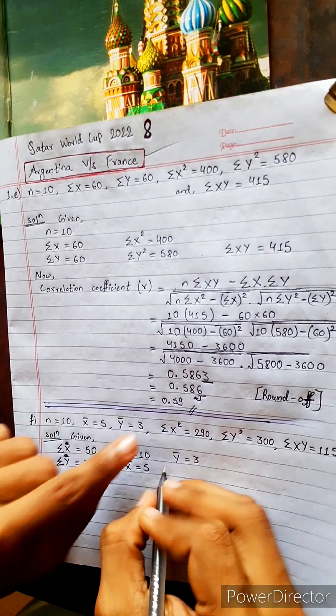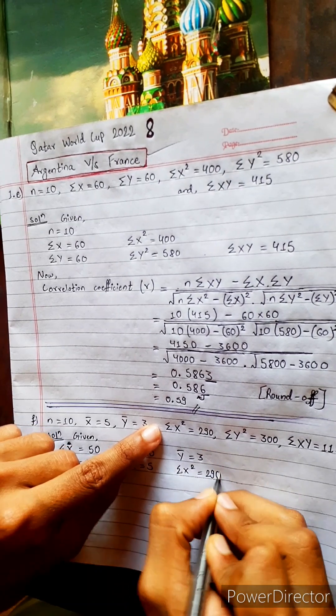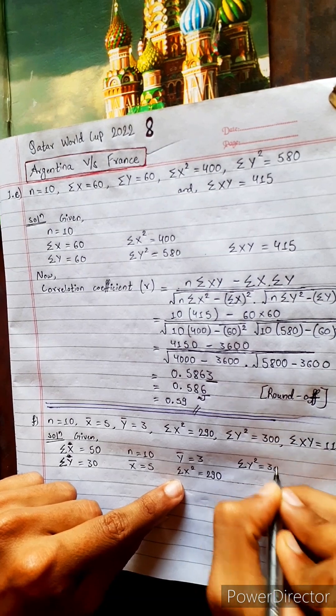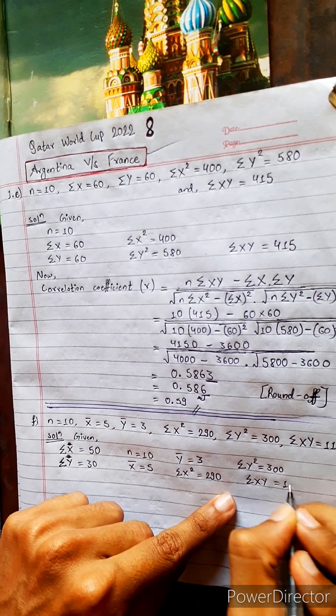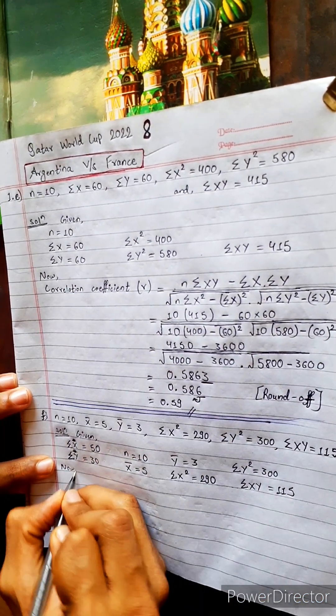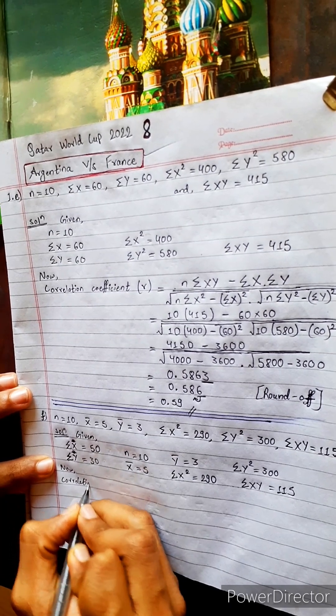Summation x square equals to 290, summation y square equals to 300, summation xy equals to 115. Formula is same. Now we know correlation coefficient.